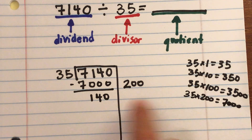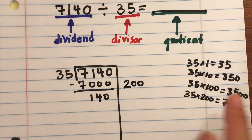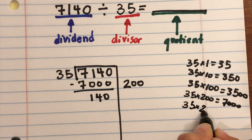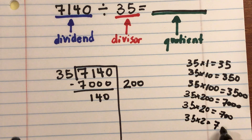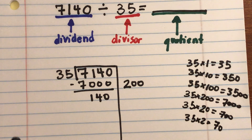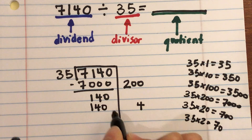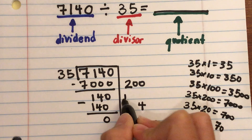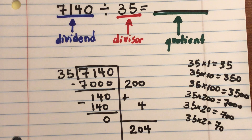Now: how many times does 35 go into 140? 35 × 2 = 70, which is too small for 140. But 35 × 2 × 2 = 140, because 2 × 7 = 14. So 35 × 4 = 140. I subtract and get 0. Adding the partial quotients: 200 + 4 = 204.